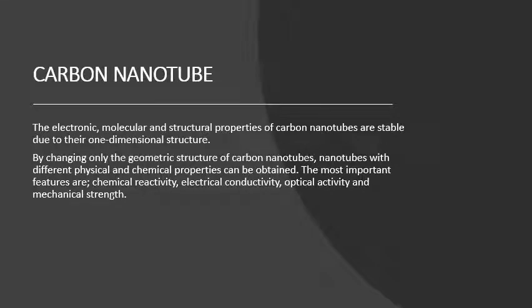The electronic, molecular, and structural properties of carbon nanotubes are stable due to their one-dimensional structure. By changing only the geometric structure of carbon nanotubes, nanotubes with different physical and chemical properties can be obtained. The most important features are chemical reactivity, electrical conductivity, optical activity, and mechanical strength.